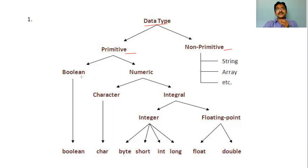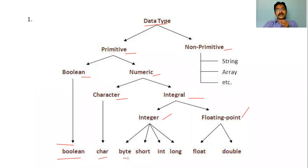In this figure, data types consist of two types: primitive and non-primitive. Primitive is further divided into two types: boolean and numeric. Boolean is represented with only one keyword — boolean. Numeric data type consists of two types: character and integral. Character data type is represented with char. Integral is divided into two types: integer and floating point. Integer data types are represented with byte, short, int, and long, whereas floating point data types are represented with float and double. Non-primitive types include string, array, list, and other related data structures.